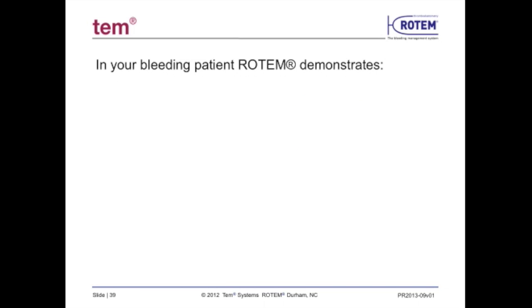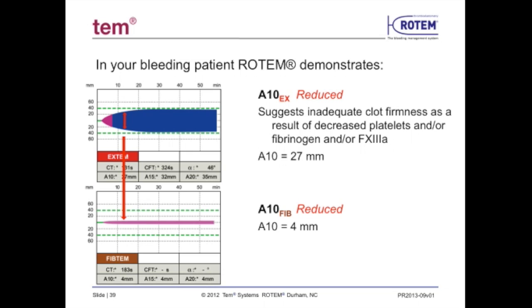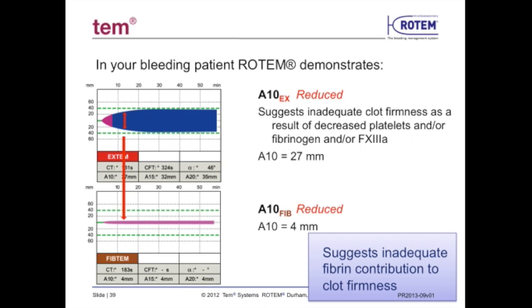In a patient exhibiting clinically significant bleeding, Extem analysis demonstrates a slow-developing clot with very low amplitude — the A10 value is only 27 mm. Since the reference range for a firm clot is 40 to 60 mm, a result of 27 mm reflects a very weak clot. A FibTem test was performed to determine whether the weak clot is due to hypofibrinogenemia or thrombocytopenia. The A10 value of FibTem is only 4 mm — well below the normal fibrin clot strength of 7 to 24 mm — indicating fibrinogen supplementation with cryoprecipitate would be beneficial.